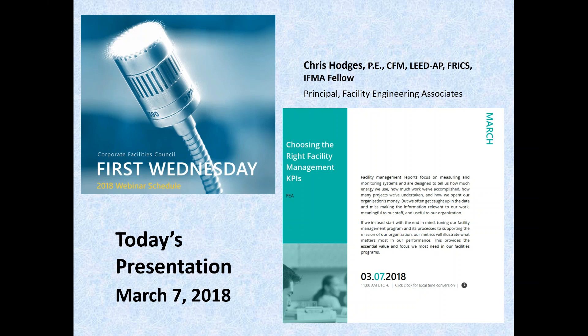I am Joshua, the Component Liaison for the Corporate Facility Council, and you are here for March's first Wednesday presentation about choosing the correct KPIs, presented by Chris Hodges, who is a CFM and an IFMA fellow. He's the principal of FEA, or Facility Engineering Association. Everyone has been muted for audio quality, and this webinar is being recorded. If you want a copy of the recording, you can access it at the Corporate Facilities website, ifmacfc.org.